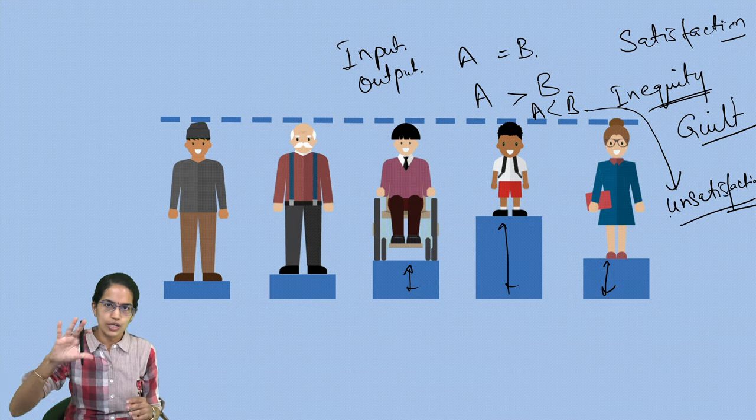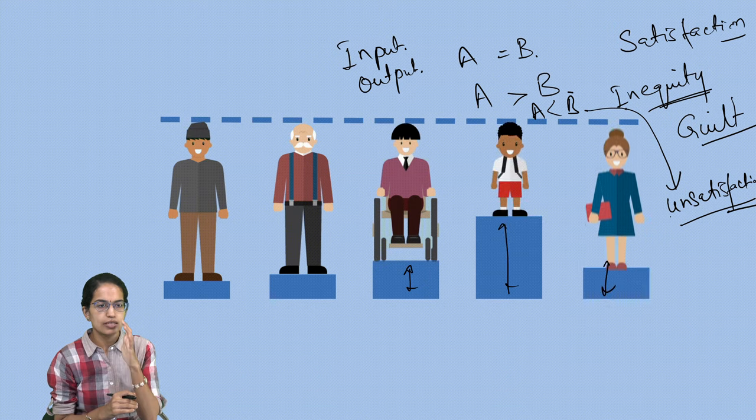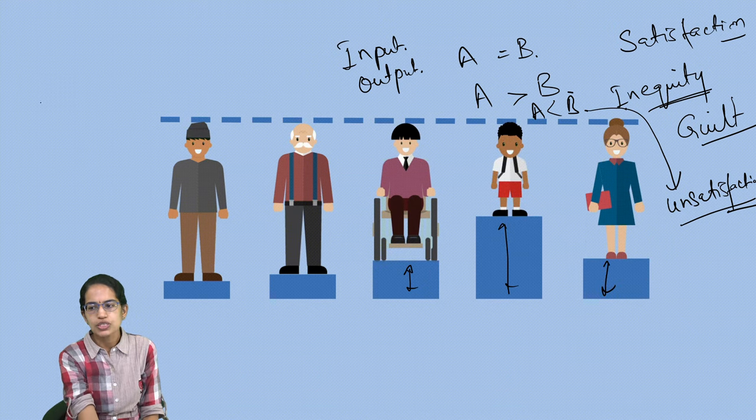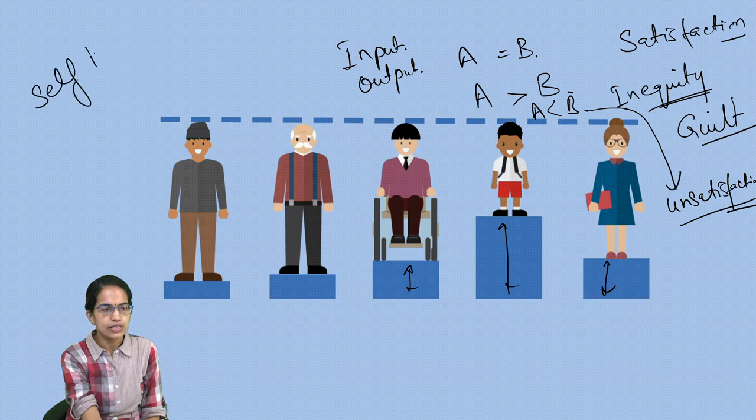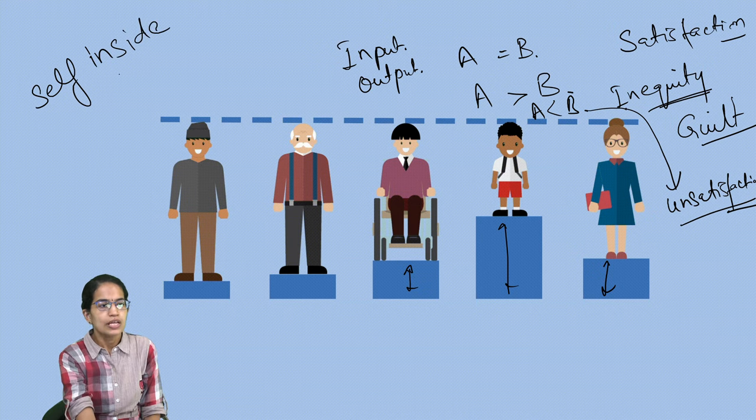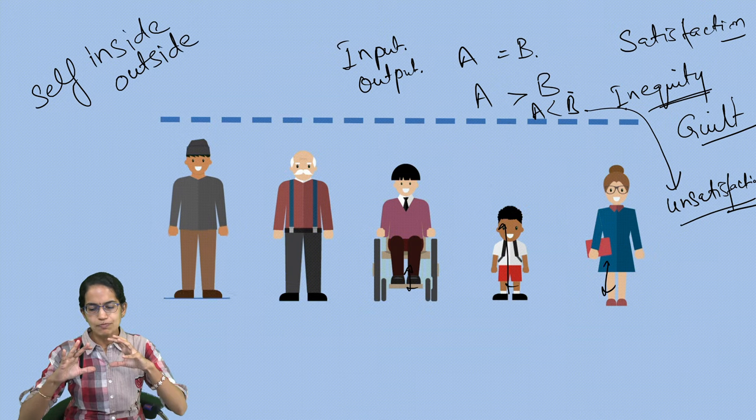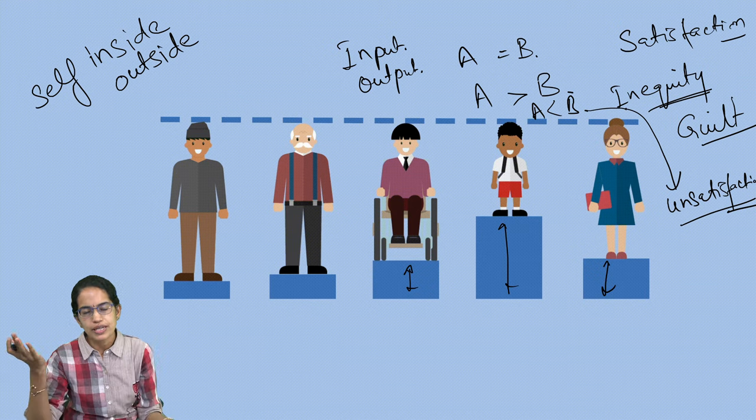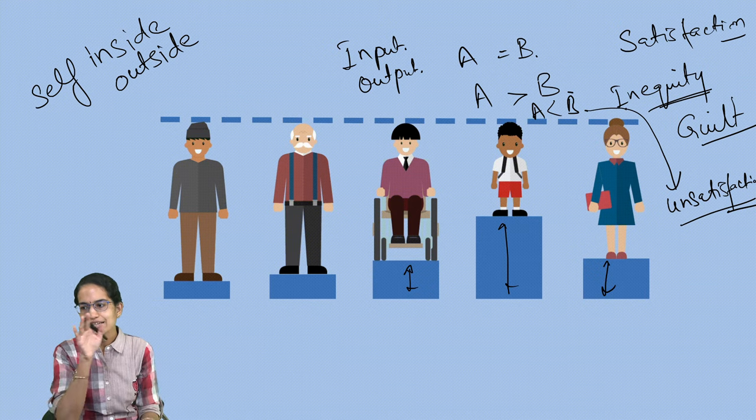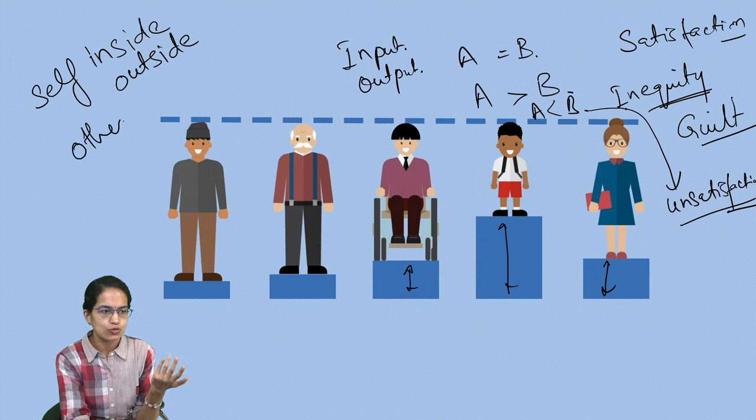Under this theory of Adams, there are four types of propositions that are discussed. What are those propositions? The first is self-inside. It is understanding who you are from within. The next is self-outside, how you observe yourself from the outside. That means the rewards, the costs, the benefits. You are weighing that against yourself.